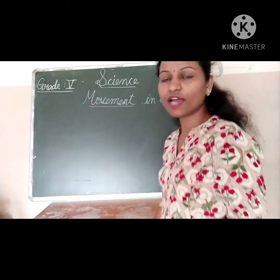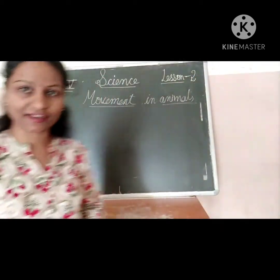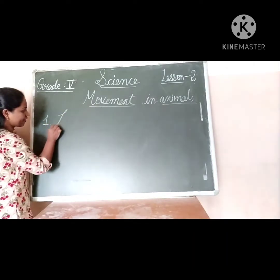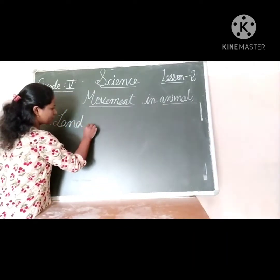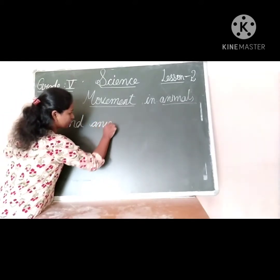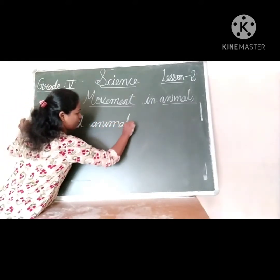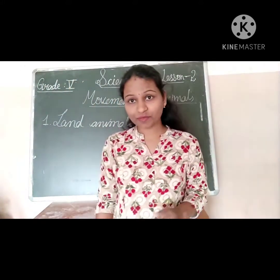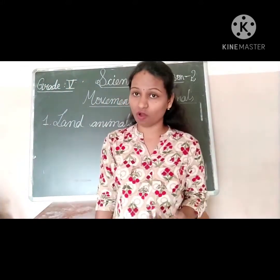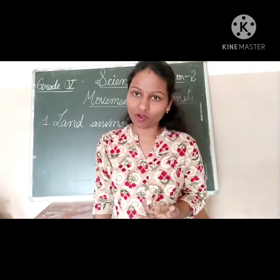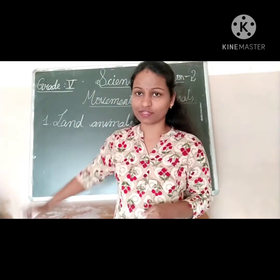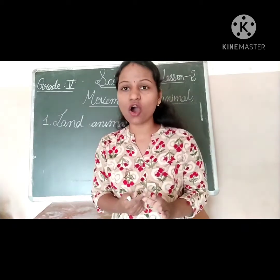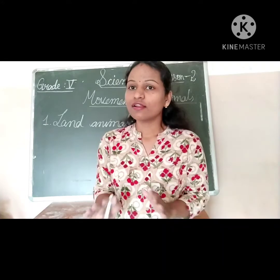So here, first we are taking land animals. Land animals — what are land animals children? The animals which are living on the land and survive on the land are called land animals, like horses, tigers, cats, dogs. These are all land animals.